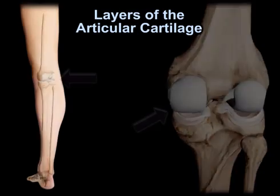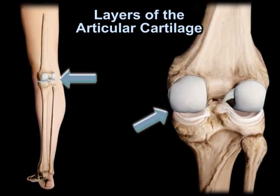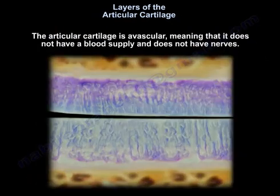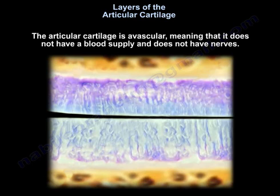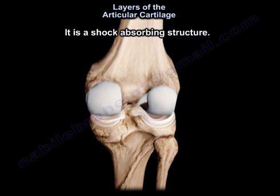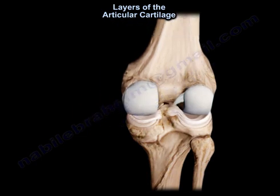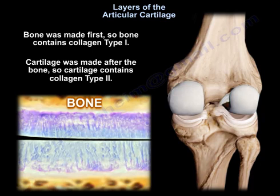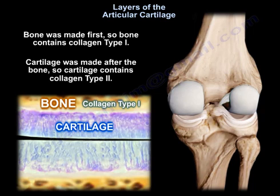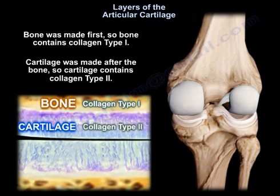The articular cartilage is avascular, meaning it does not have a blood supply and it doesn't have nerves. It is a shock-absorbing structure. Bone was made first, so bone contains collagen type 1, and cartilage was made after the bone, so cartilage contains collagen type 2.